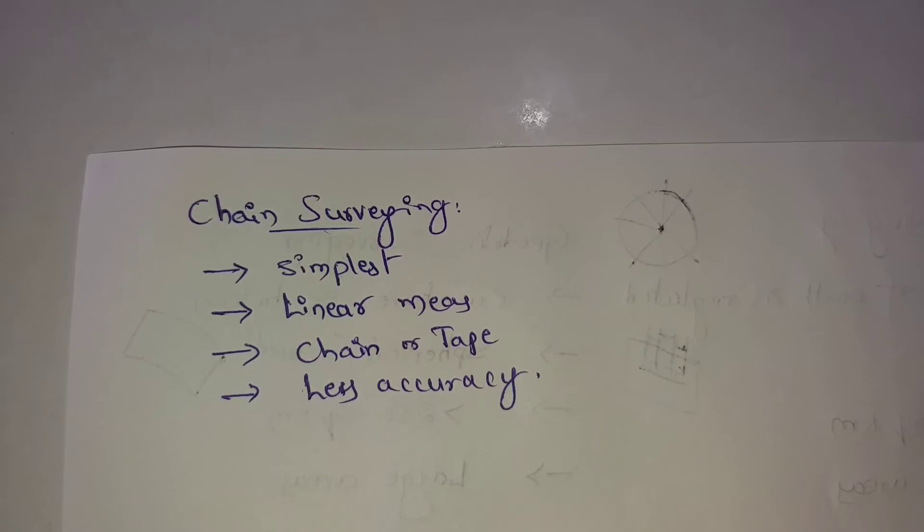These linear measurements are found using chains or tapes. Chain surveying has less accuracy compared to other types of surveying.